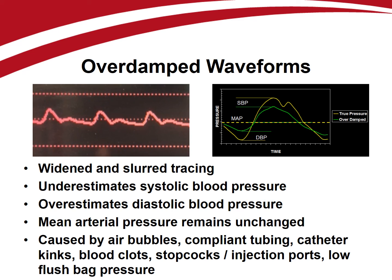In an overdamped waveform, obstructions to pressure wave propagation result in a widened, slurred tracing that underestimates systolic and overestimates diastolic blood pressure. Mean arterial pressure measurements are again the least affected and more accurately reflect the patient's true blood pressure. Overdamping is caused by air bubbles, which act like a shock absorber, compliant tubing, catheter kinks, blood clots, stopcocks or injection ports, and low flush bag pressure.